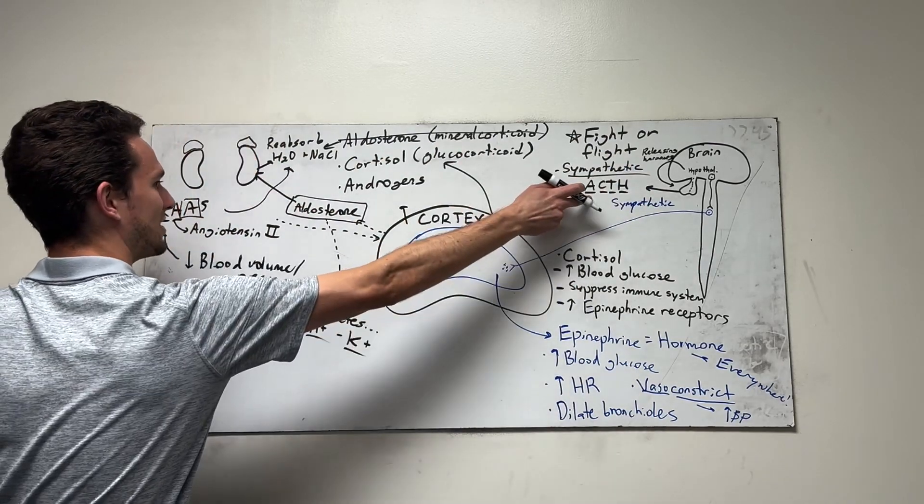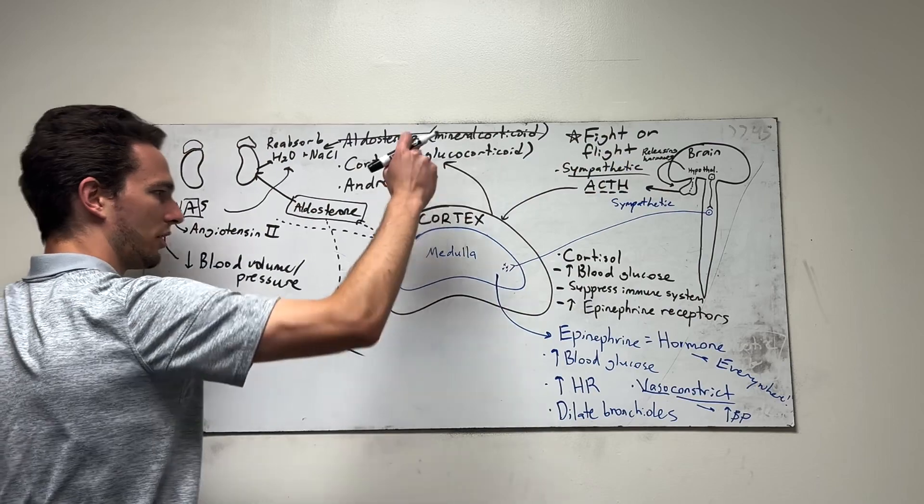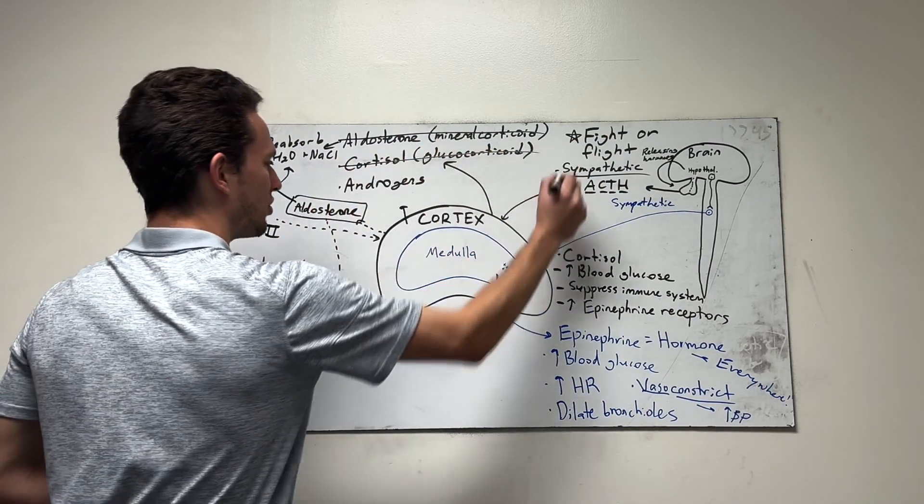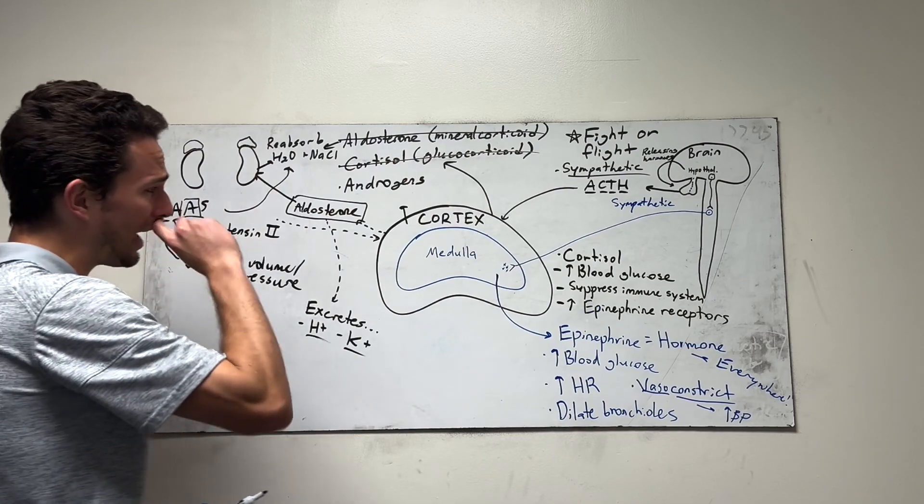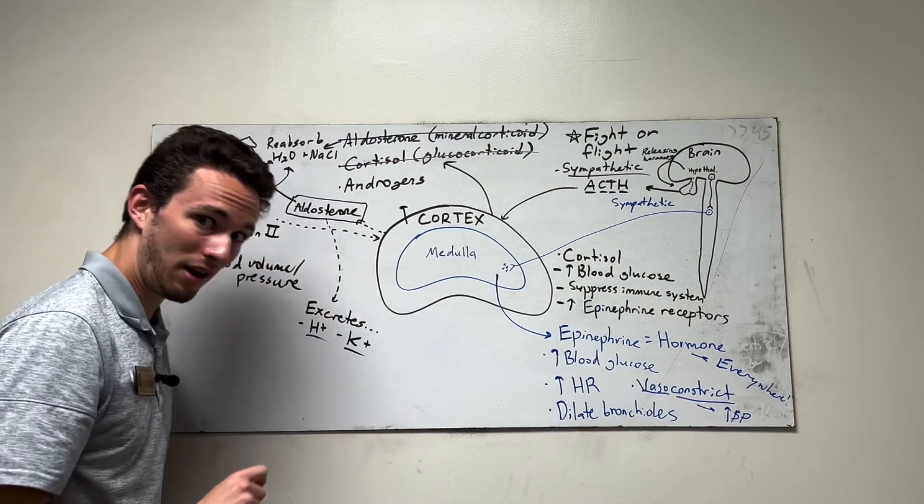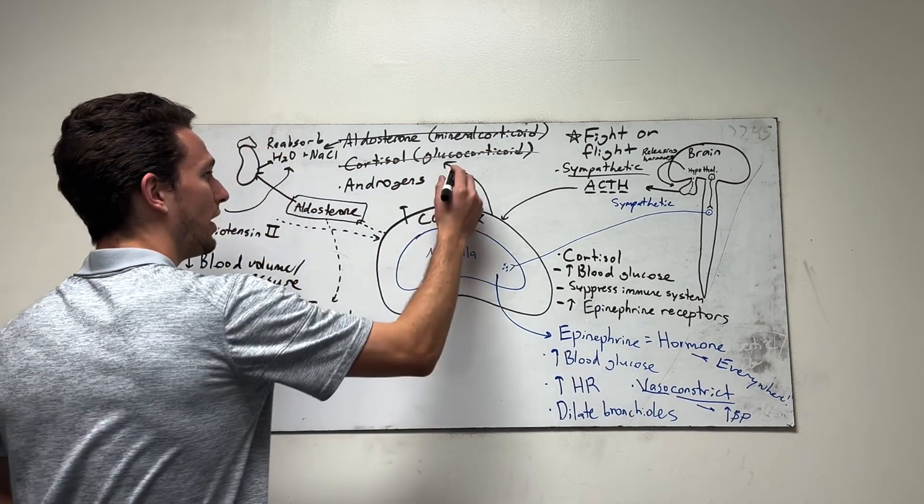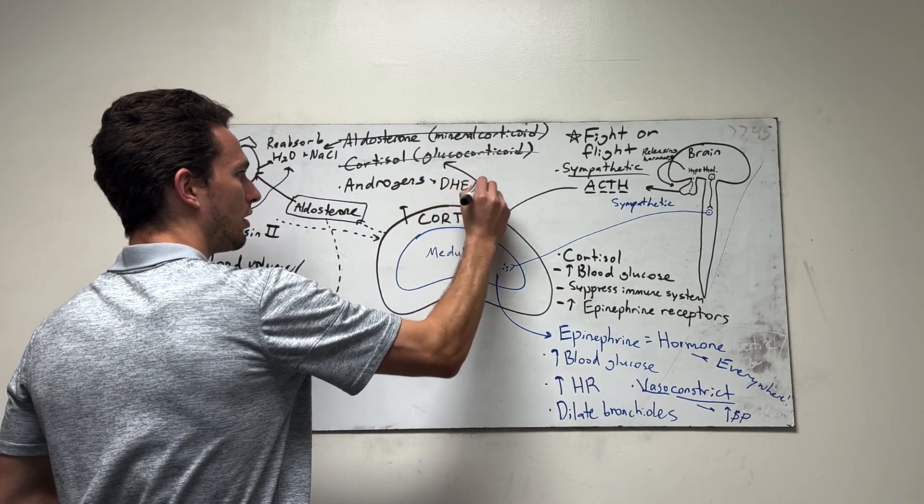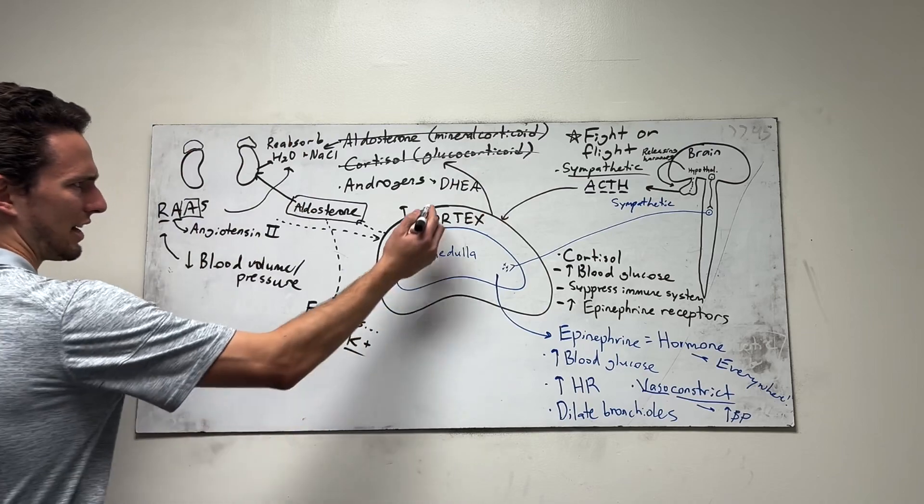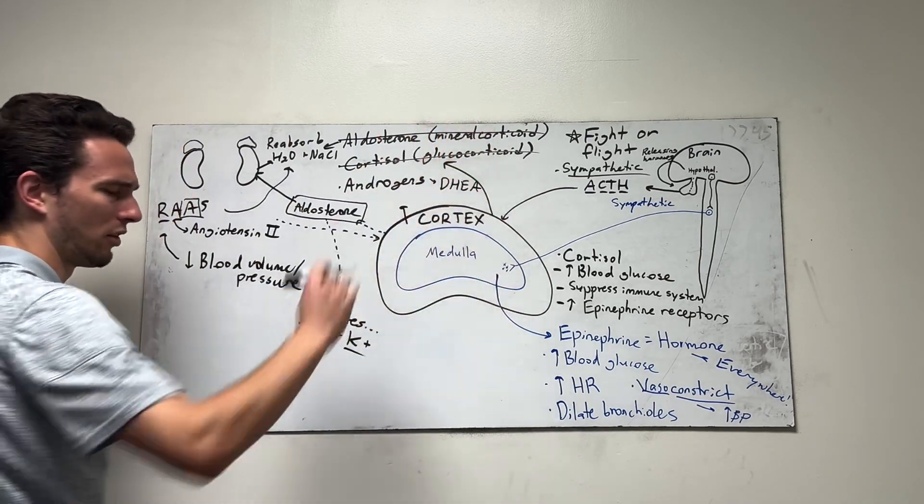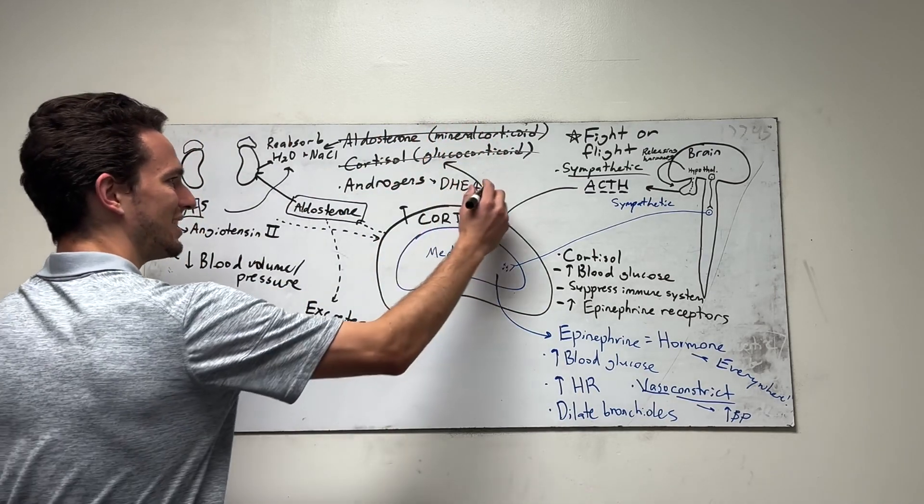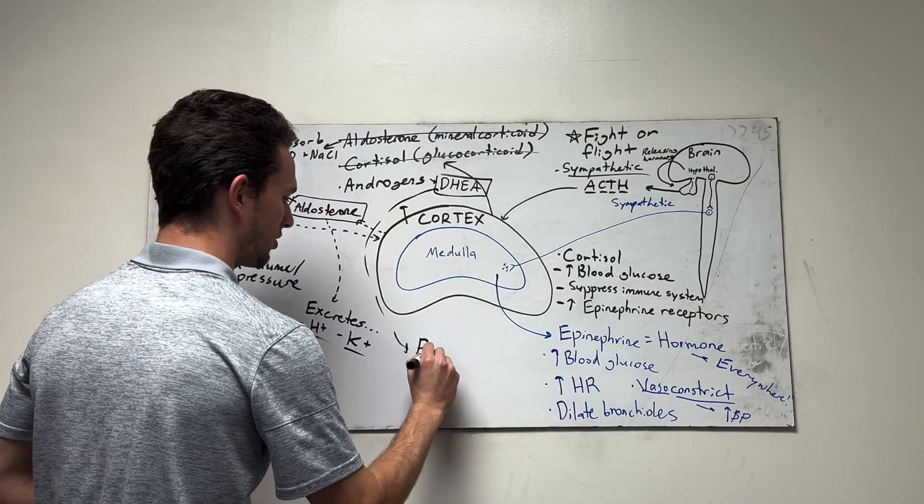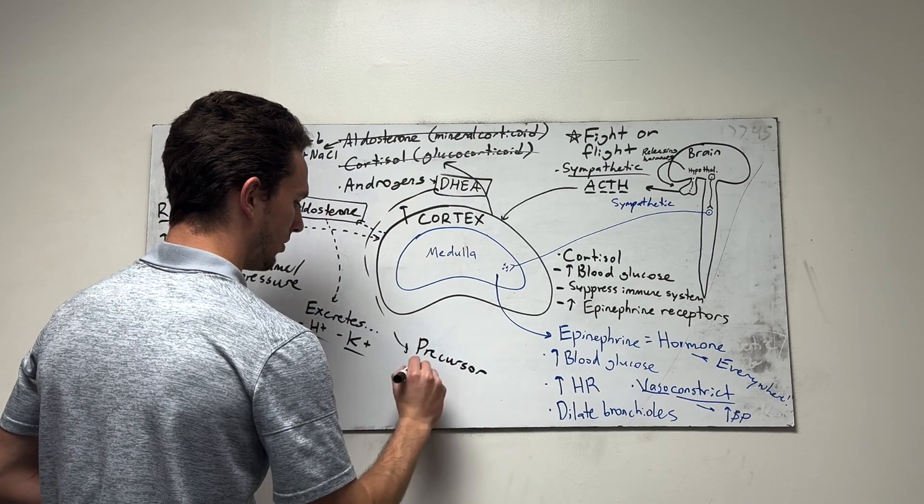So that's cortisol released with the hypothalamus. Once again, response to stress makes ACTH to the cortex, makes the cortisol. Cortisol does all these sort of things. Last one will be these androgens. Now, I don't know a ton about these, but what I will say is one androgen is called DHEA. I think it's like dihydroxyester or something, whatever, doesn't really matter. But what this is, is a precursor. So DHEA and all these other androgens are precursor sex hormones.